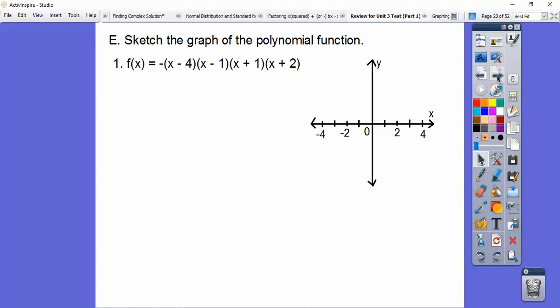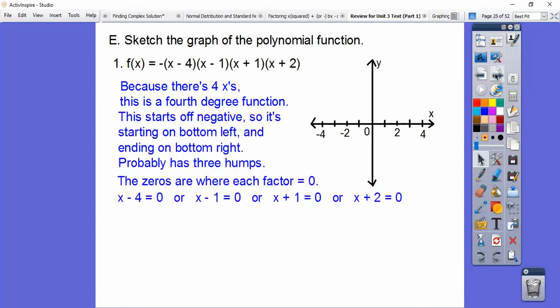Let's sketch the graph of this polynomial function. This one has 4 x's. In my class, I'd hold my hands up like a touchdown, and I'd say it's a touchdown, and it has 3 humps, probably 3 humps, because it's always 1 less than what degree it is. But this one's negative, so it's an upside-down touchdown. Let's go ahead and graph the intercepts. We get the intercepts, or the zeros, when we set each of those factors equal to zero. So there they are, x equals 4, 1, negative 1, negative 2.